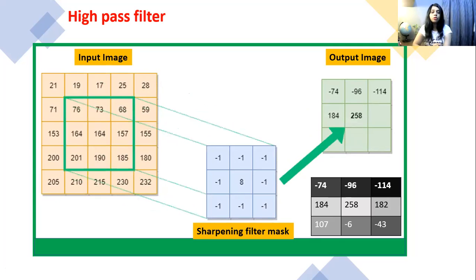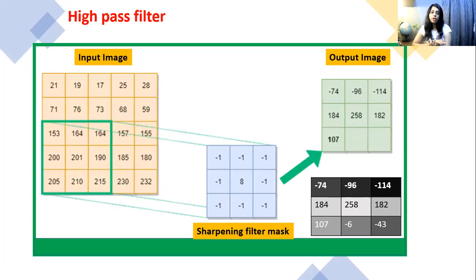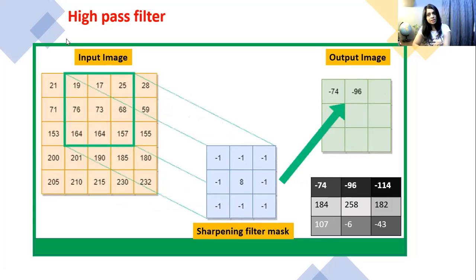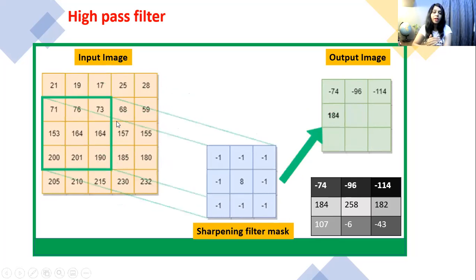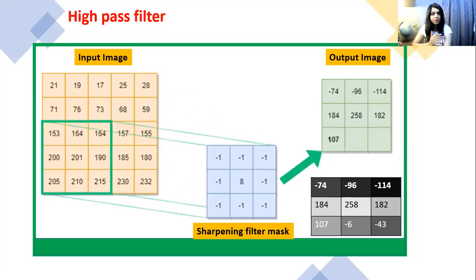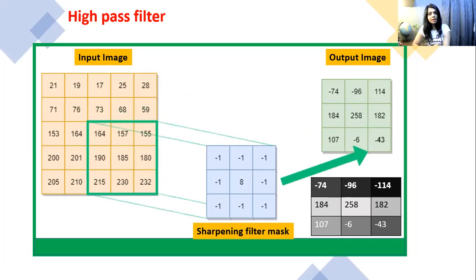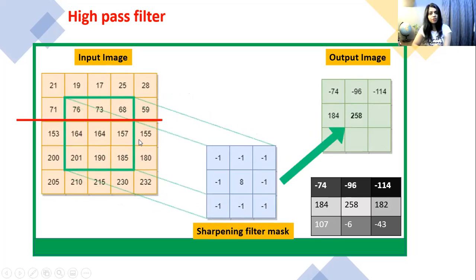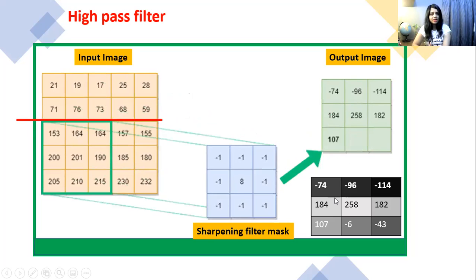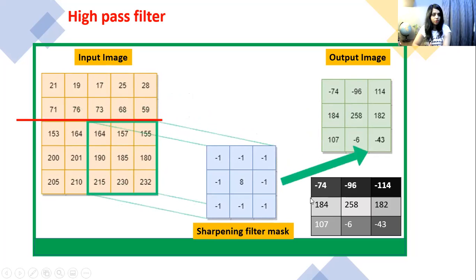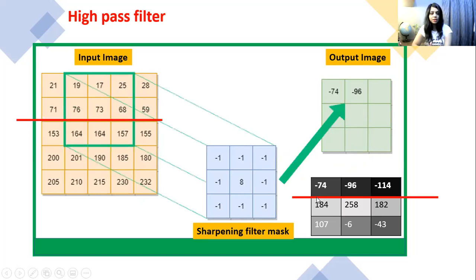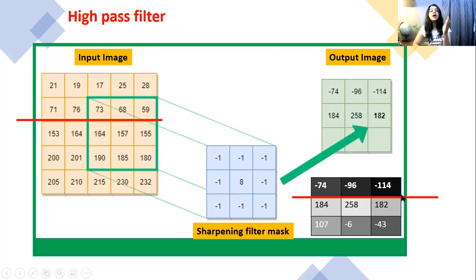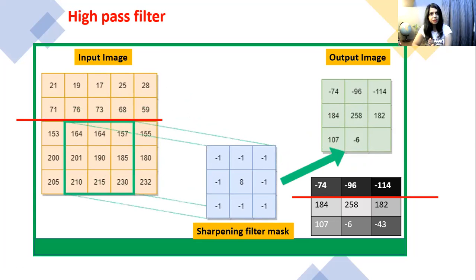Concentrate on the input image — values like 71, 76, 73, 68, and 59 are very close to black, since zero represents perfect black and 255 represents perfect white. These values are close to black pixels, whereas 153 and 164 are close to white. That's why you can see a clear border — the edges are clearly visible in the output image.